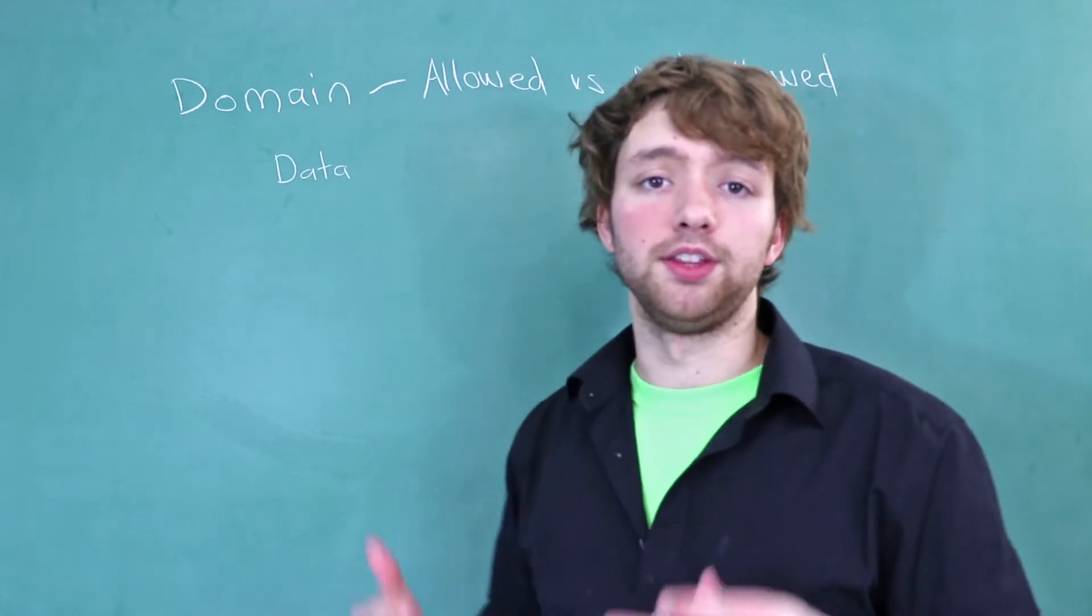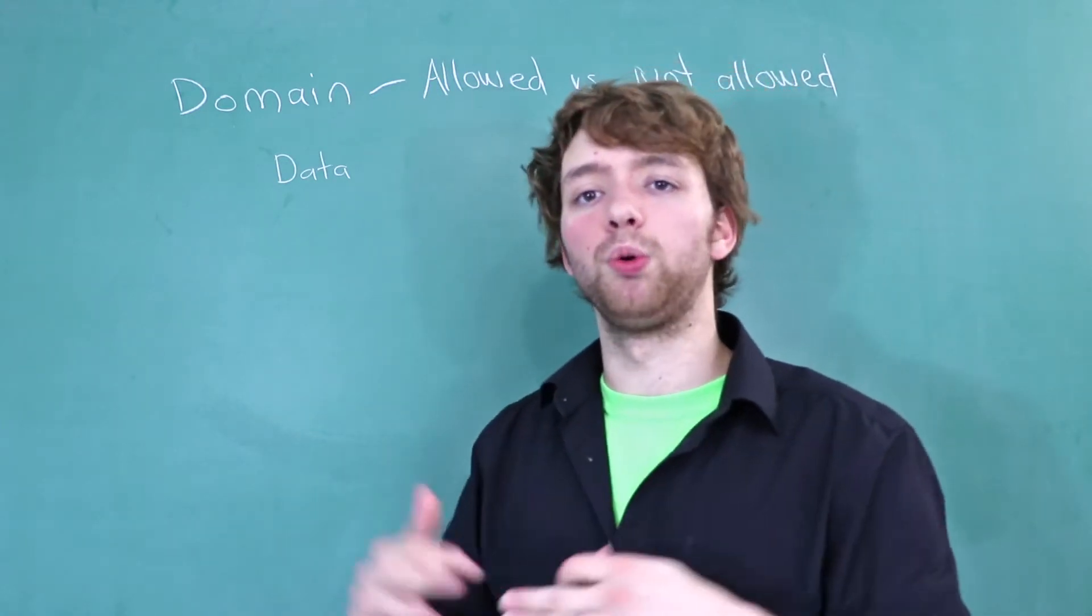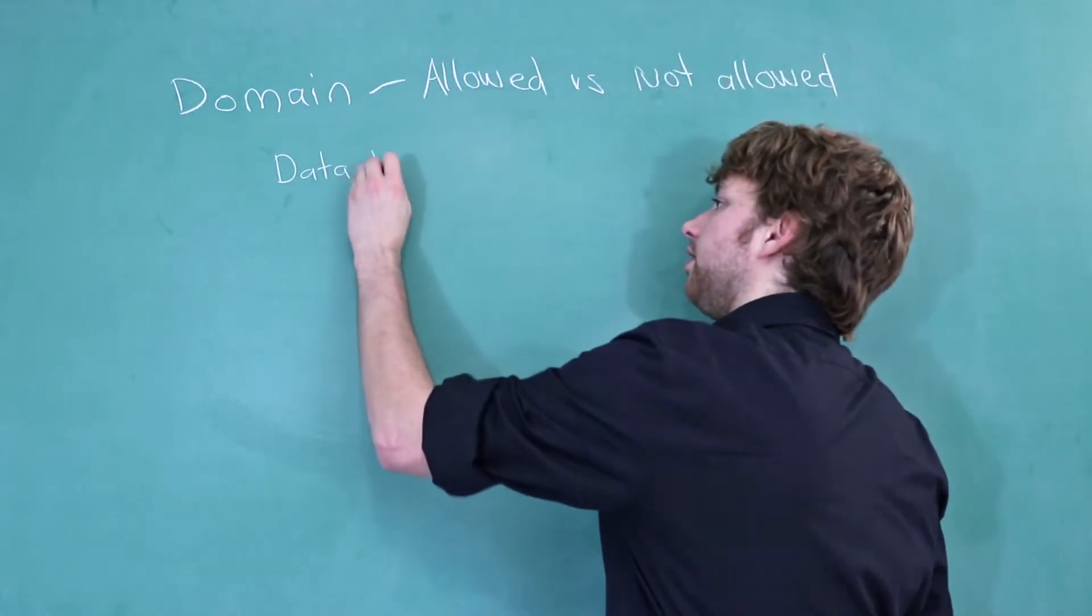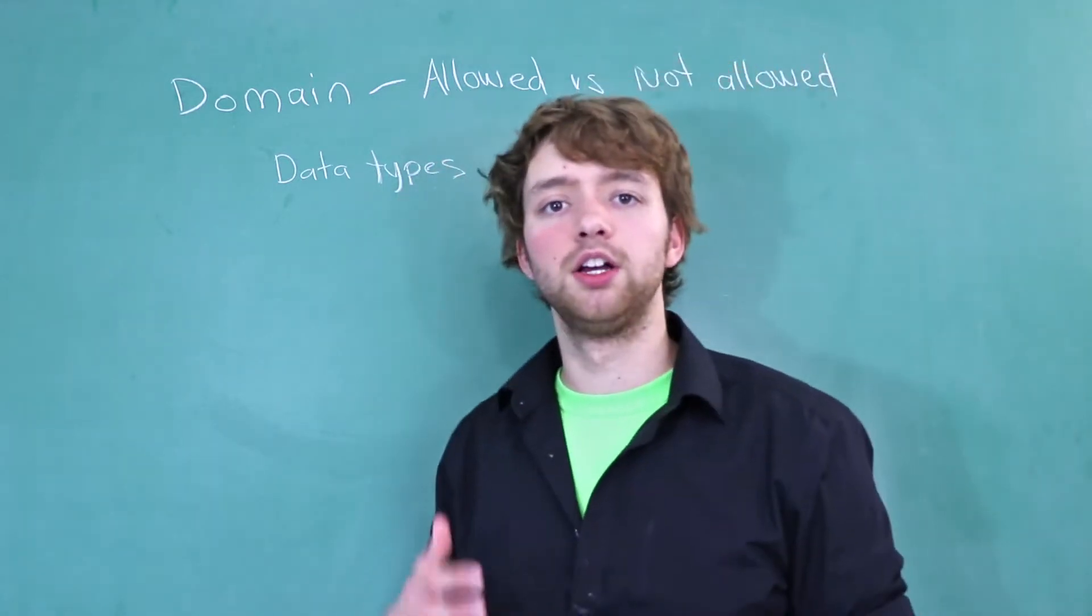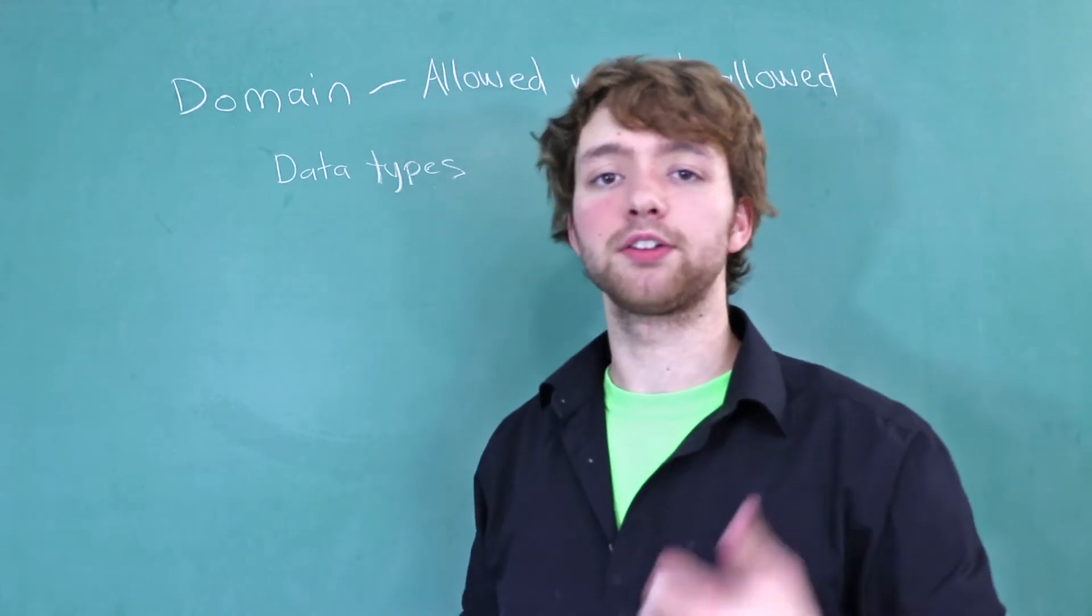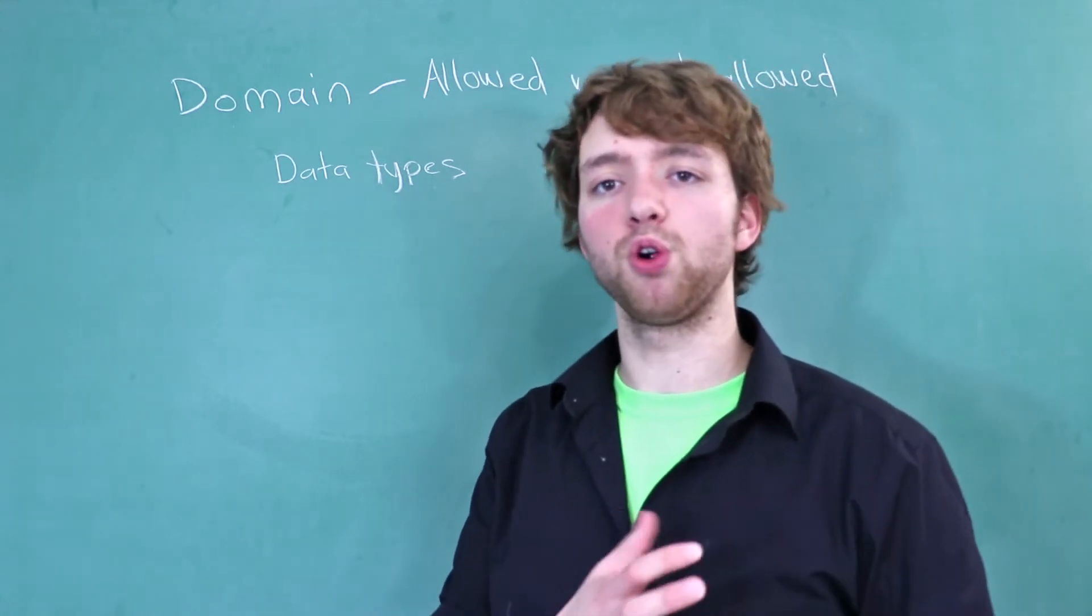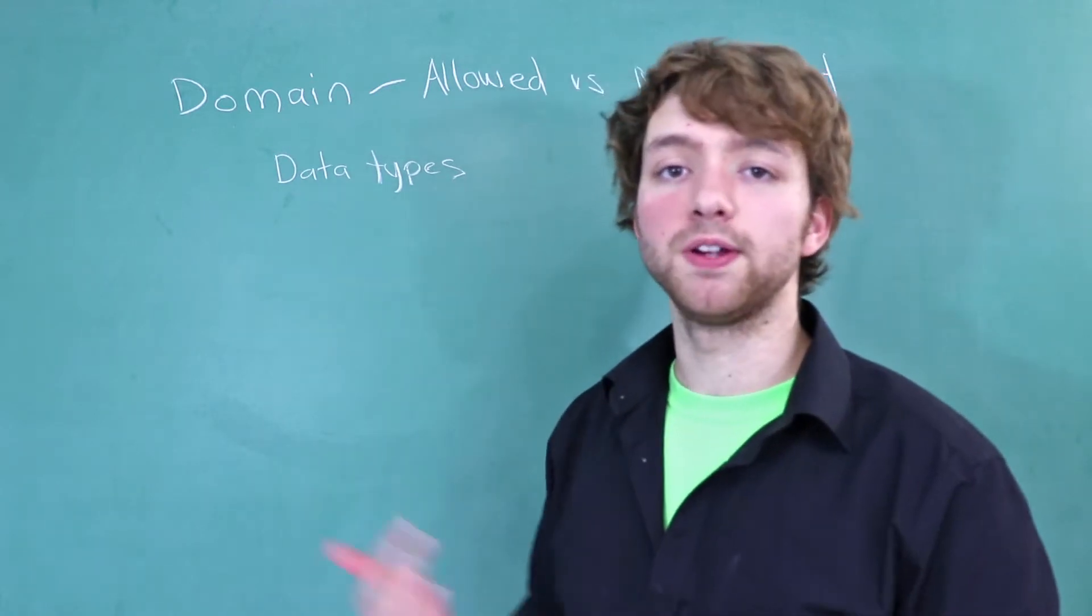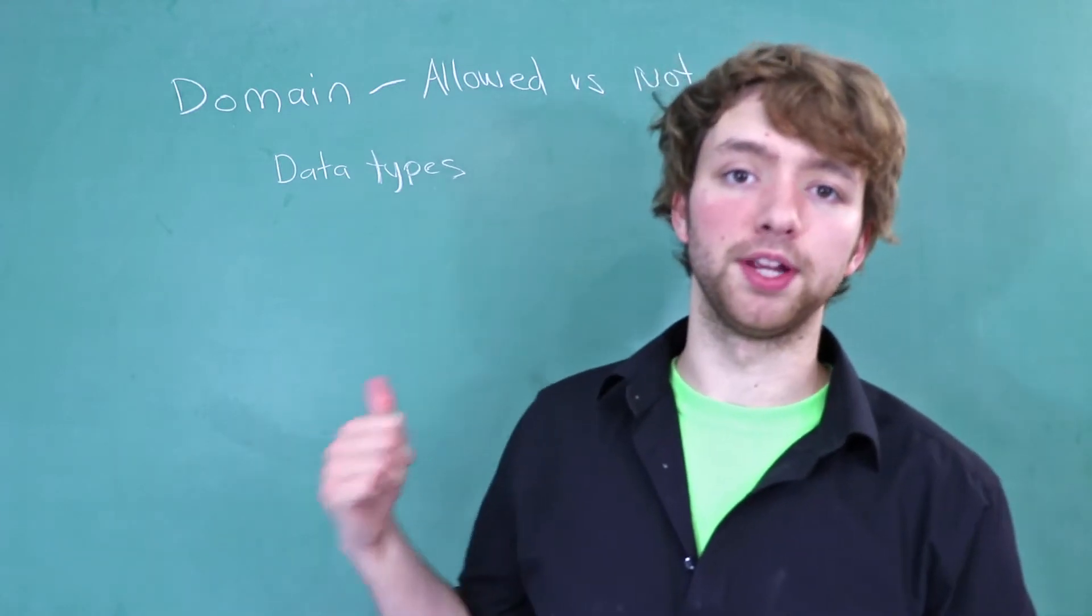If we do not have domain integrity, then we cannot trust our data to be in a set of different values or within a certain range of values. So the data types, these are a very general way to restrict data. So for example, you can have a numeric data type and that's going to reject string data. You can have a date data type and that's going to force every single value to be of a date format. You can get very specific on what kind of data you're looking for by using the appropriate data type.